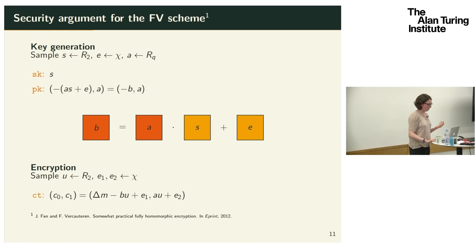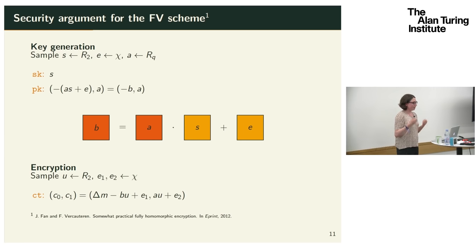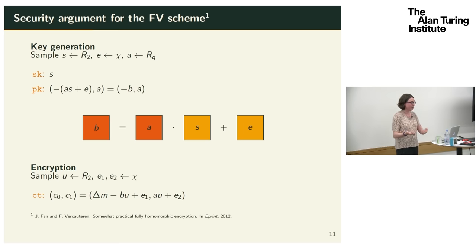For key generation, the secret key is a vector s drawn from a small set R_2 rather than all of R_Q. The public key looks exactly like a Ring-LWE sample: a uniformly random element a and the value -(as + e), where e is from an error distribution. This means recovering the secret key from the public key is exactly the search Ring-LWE problem.